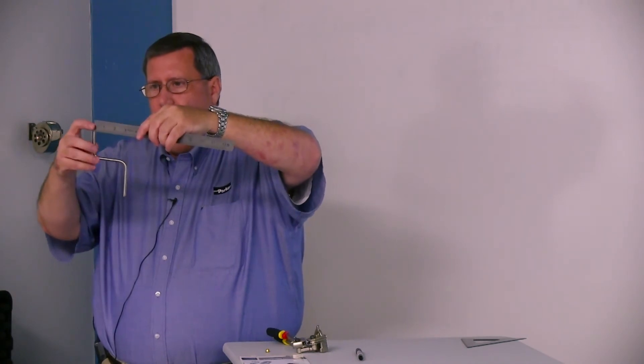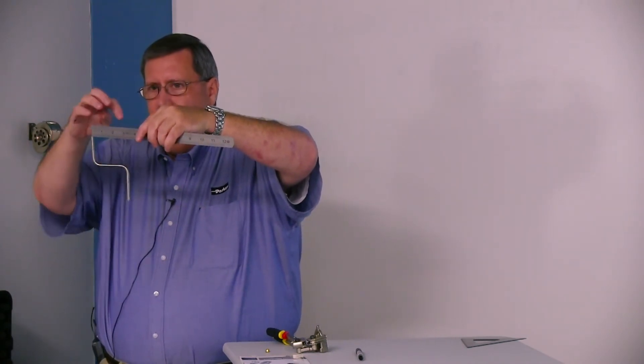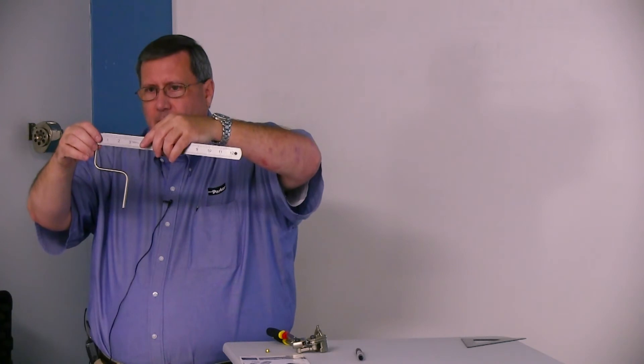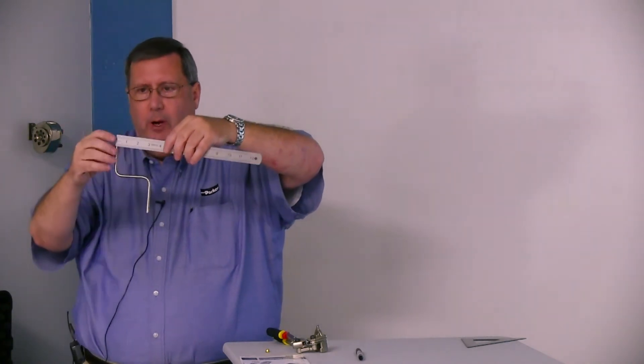Okay, take the edge of the ruler here, line it up with this edge, and then mark it three inches. And of course take the ferrule and mark all the way around it.